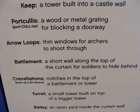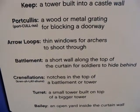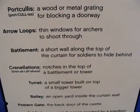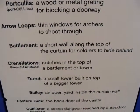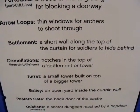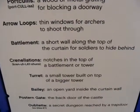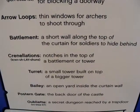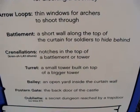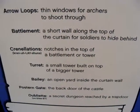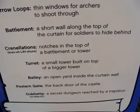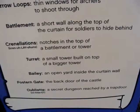Crenelations: notches in the top of the battlement or tower. Turret: a small tower built on top of a bigger tower. Bailey: an open yard inside the curtain wall. Postern gate: the back door of the castle. Oubliette: a secret dungeon reached by a trapdoor.